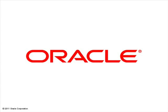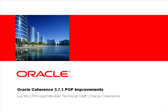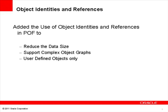In Coherence 371, we improved the path to support object identities and references. By using object references, we can reduce the serialization data size and support complex object graphs.